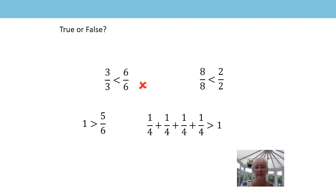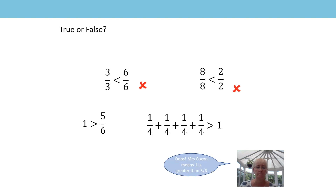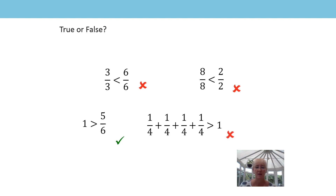Next: eight eighths is less than two halves — do we agree? No, because eight eighths is equivalent to one and two halves is equivalent to one, so eight eighths is equivalent to two halves. Third: one is less than five sixths. Six sixths would be equivalent to one, so one is actually greater than five sixths — that statement is false. And last: a quarter plus a quarter plus a quarter plus a quarter plus a quarter is greater than one — no, that's not correct either. We have all four quarters which is equivalent to one, so we need an equals sign.